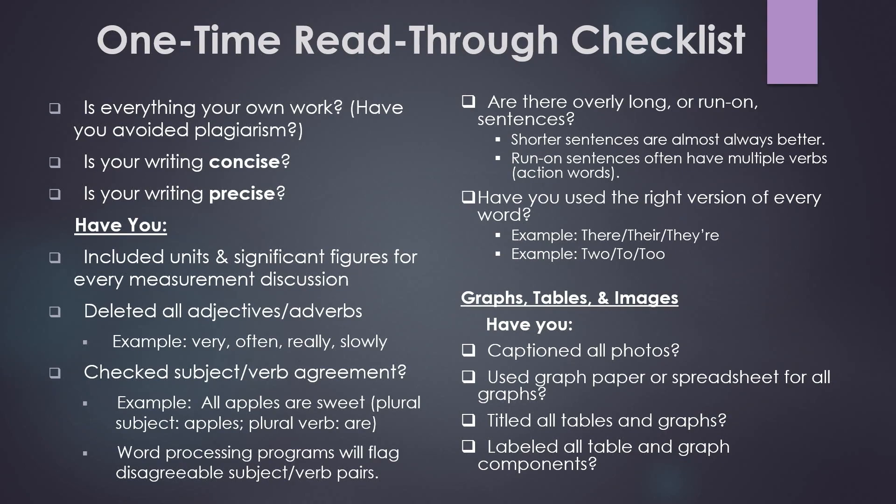Next, have you checked subject-verb agreement? For example, if you say all apples are sweet, your plural subject, apples, goes with a plural verb, are. Word processing programs will generally flag disagreeable subject-verb pairs. So, for example, if your sentence said all apples is sweet, that would be incorrect and Word would put a little squiggly line under the verb, which is is there. If you see that blue squiggly line, it usually means something is wrong and you should look at it again to see what you can fix.